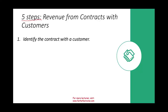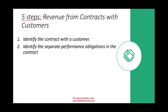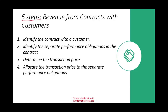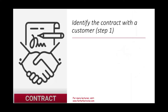Step one: identify the contract with a customer. Step two: identify the separate performance obligations in the contract. Step three: determine the transaction price. Step four: allocate the transaction price to the separate performance obligations. Step five: recognize the revenue when each separate obligation is satisfied. We'll start with identifying a contract with the customer.